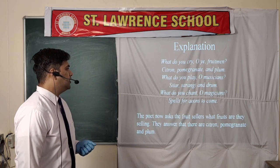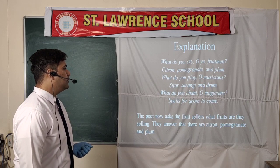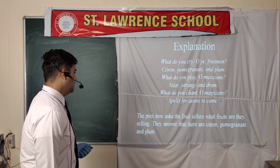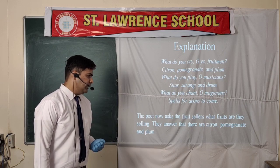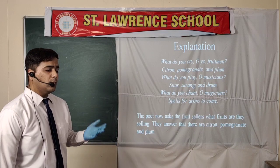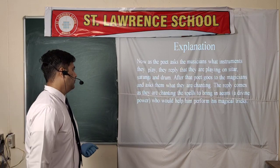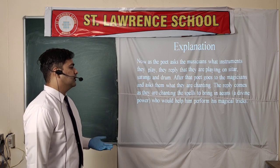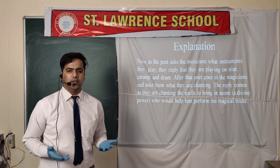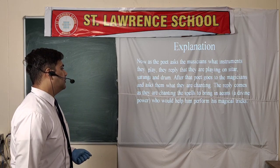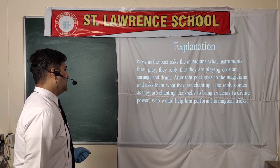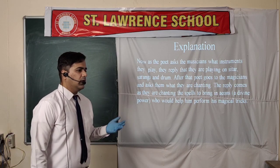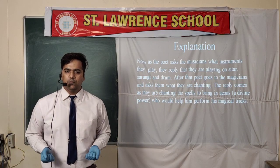'What do you cry, O ye fruit men? Citron, pomegranate and plum. What do you play, O musician? Sitar, sarangi and drum. What do you chant, O magicians? Spells for aliens to come.' The fruit sellers are selling citron, pomegranate and plum. The musicians are playing sitar, sarangi and drum to entertain the crowd. The magicians are chanting spells to bring in Aeons — a divine power which helps them perform their magical tricks.